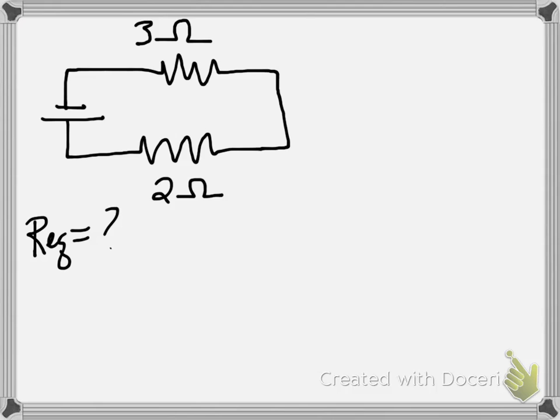All right, your first problem is set up for you, and this is just sort of a dummy problem. Then we'll do the one out of the book, which is a little bit more challenging. So we have a circuit with a 2 ohm and a 3 ohm resistor in series. What is the equivalent resistance?